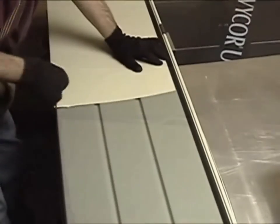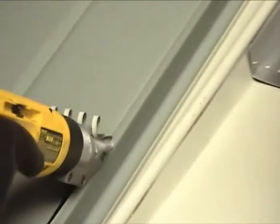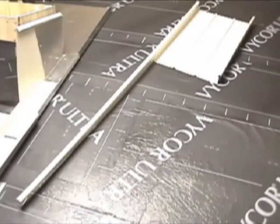Field cut an upslope panel to reach to the front of the curb. Cope out the pan leaving an extended female rib. Save the male rib for the other side.